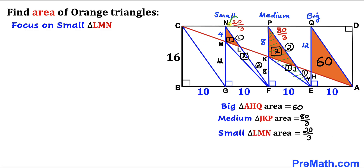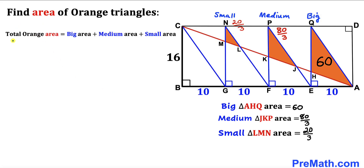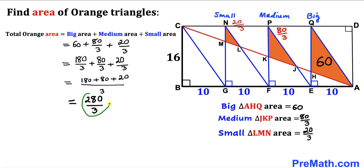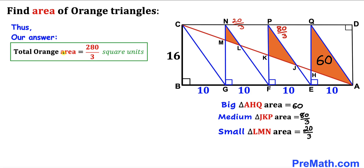Finally, the total orange triangle area equals the big triangle area plus the medium triangle area plus the small triangle area: 60 + 80/3 + 20/3. Adding these gives 60 + 100/3 = 180/3 + 100/3 = 280/3 square units. The total orange triangle area is 280/3 square units. Thanks for watching — please subscribe for more videos!